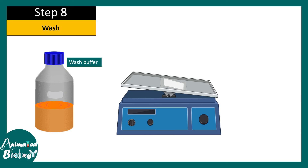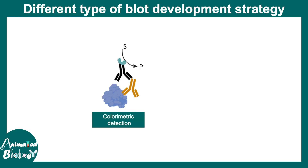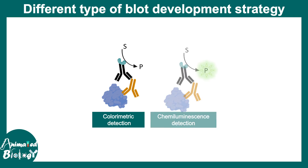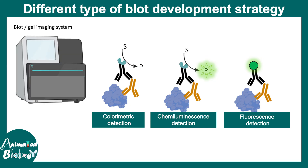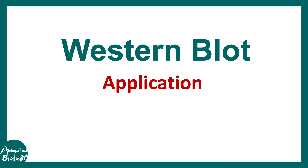Finally, the blot is developed. There are different detection strategies. In colorimetric detection, the secondary antibody is linked to an enzyme which, upon addition of substrate, produces a colored product. In chemiluminescence detection, a chemiluminescent substrate is converted into a product that emits light. There is also fluorescence-based detection where the secondary antibody is tagged with a fluorophore. Widely used methods are chemiluminescence and fluorescence — fluorescence is sensitive but also expensive. These blots are imaged in a gel scanner or blot scanner with an imaging system to adjust exposure and focus. This is how one can get a picture-perfect Western blot.